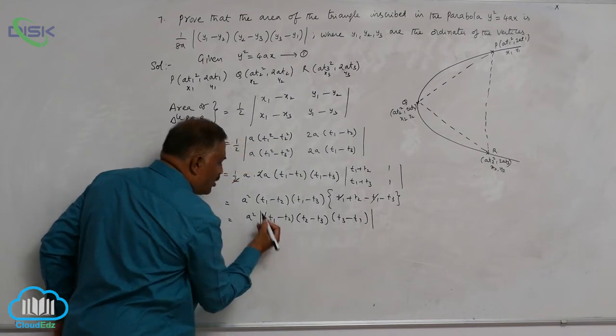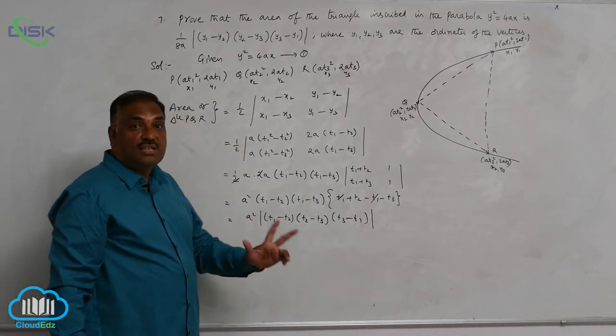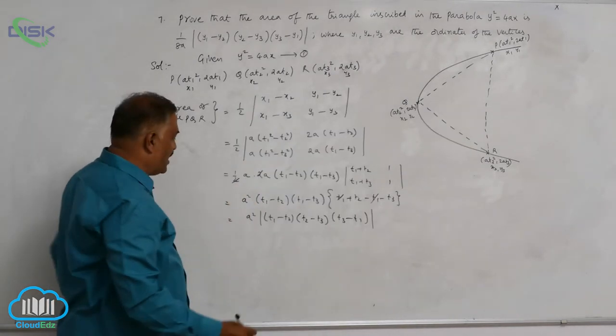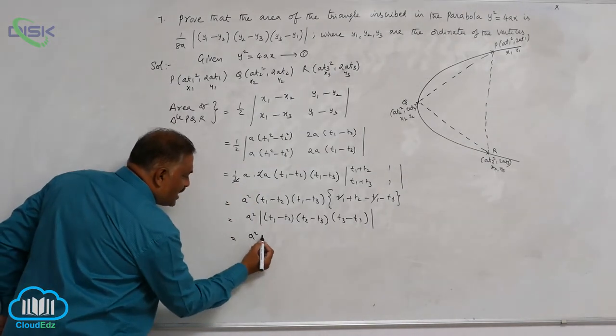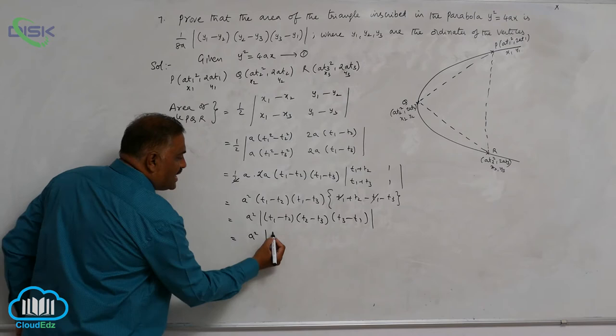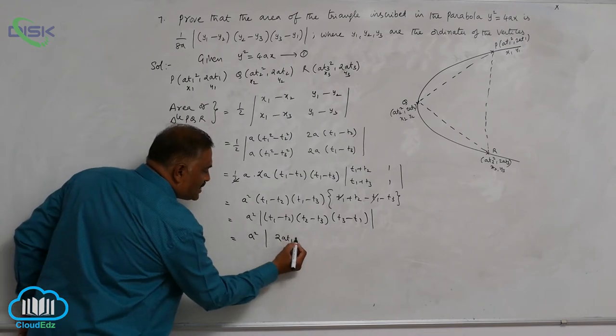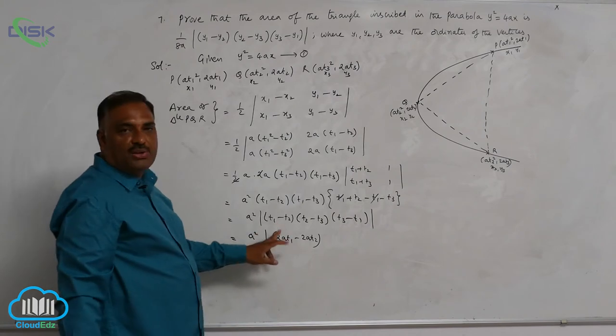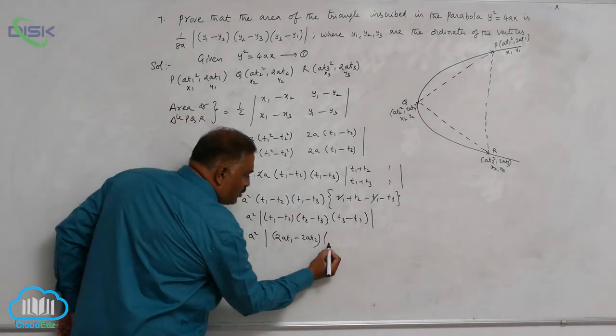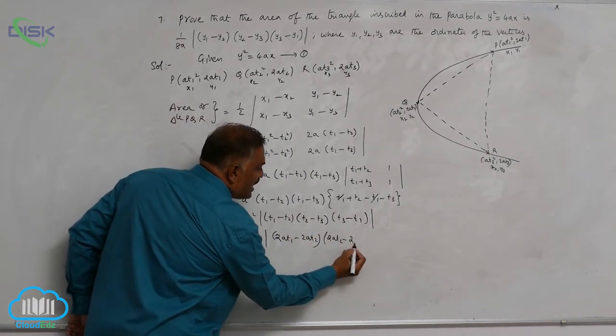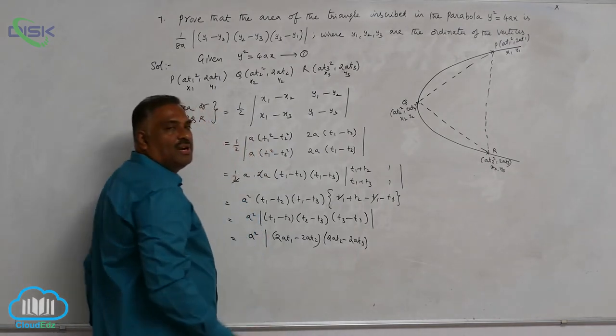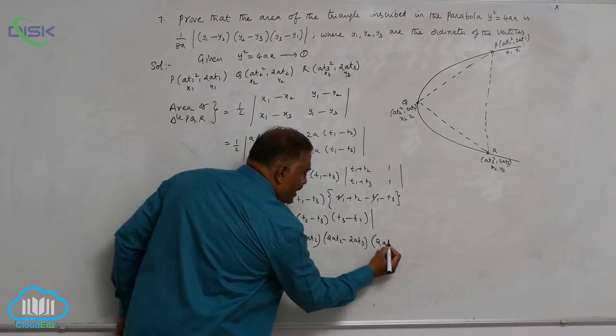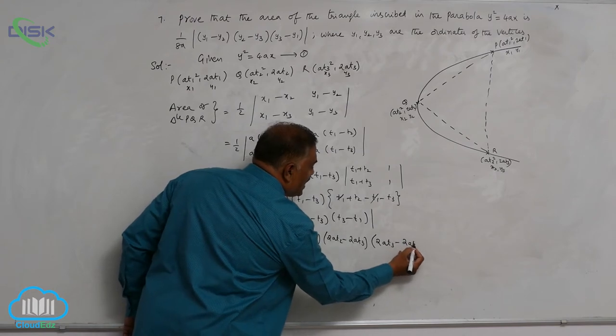Now, because area, put it in modulus. Now, you check the vital importance step here. This is a² into, now I will write this is 2at₁ minus 2at₂. That means, I multiplied first bracket by 2a. Again, 2at₂ minus 2at₃. Second bracket also by 2a. Third bracket also by 2a. 2at₃ minus 2at₁.